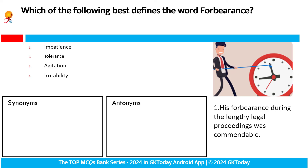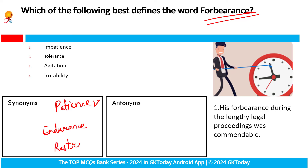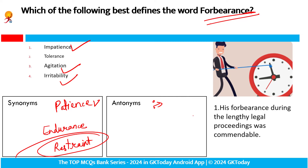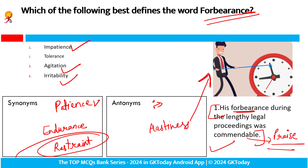Which of the following best defines the word 'forbearance'? Patience ke liye is word ko use kiya jata hai — patience. So patience is the synonym. Tolerance bhi synonym hai iska — forbearance ke liye endurance, restraint. Restraint naya bada hai. Patience ke liye hai. Antonyms hongi: impatient, agitation, irritability, intolerant, hastiness. Just like this picture — kya dikh raha hai is mein? Hastiness dikh raha na? Patience nahi hai jisko. So his forbearance during the lengthy legal proceedings was commendable. Uski jo forbearance thi — yani patience — during the lengthy legal proceedings — commendable thi. So forbearance yani patience rakhna, endurance yani.